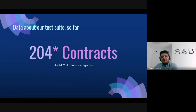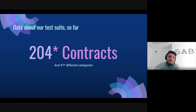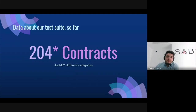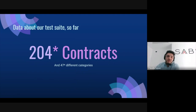Currently our test suite contains 204 contracts split among 47 different categories. The test suite is actually bigger than that, but some categories either did not compile on the latest version of Solidity — such as arbitrary write to storage or operator typos — or some issues were fixed in recent versions of Solidity, like integer underflow and overflow, where currently an exception is thrown and the transaction is reverted. Those tests aren't included in the statistics, but we have them just in case.